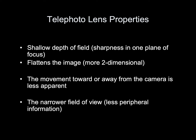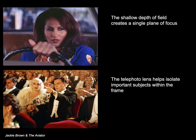Telephoto lens properties: a telephoto lens gives the opposite properties from a wide-angle lens. It creates a shallow depth of field, preserving sharpness in only one plane of focus. It flattens the image, making it more two-dimensional. Movement towards or away from the camera is less apparent, and it creates a narrower field of view, compressing the areas around the frame. Examples include a still from Jackie Brown, where the area behind the character's head is out of focus, and a still from The Aviator, which isolates the important subjects in the middle ground.